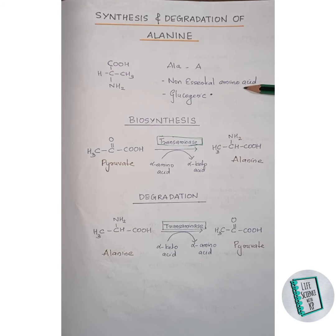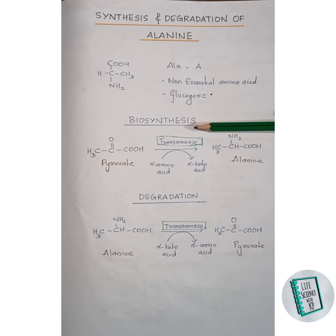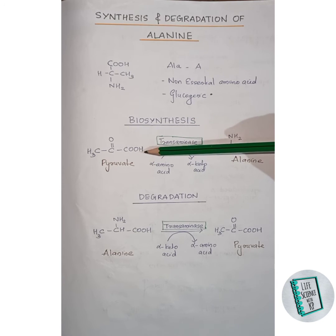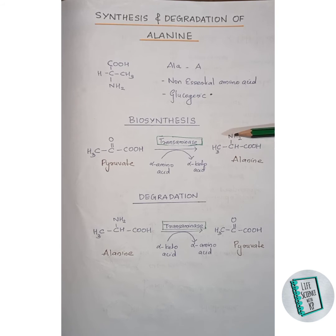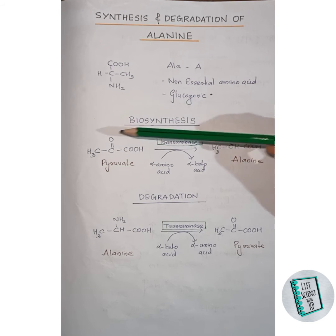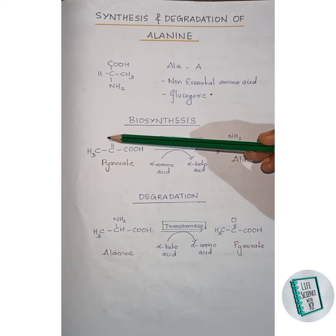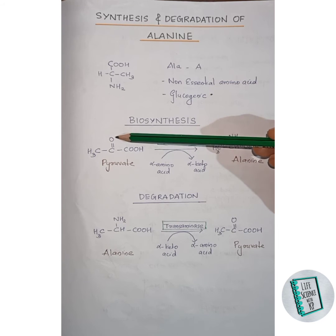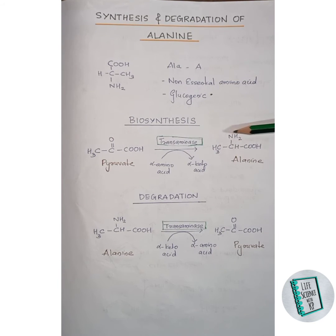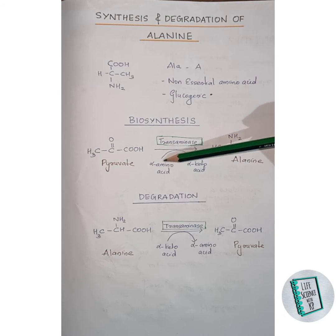Now let us move on to the biosynthesis of alanine. Alanine biosynthesis starts with pyruvate. Pyruvate is transaminated by transaminase enzyme to form alanine. The keto group of pyruvate gets replaced with an amino group, which is provided by an alpha amino acid during this transamination, and hence alanine is formed.